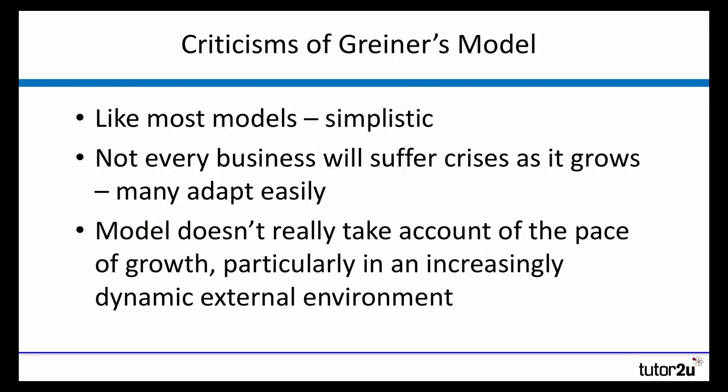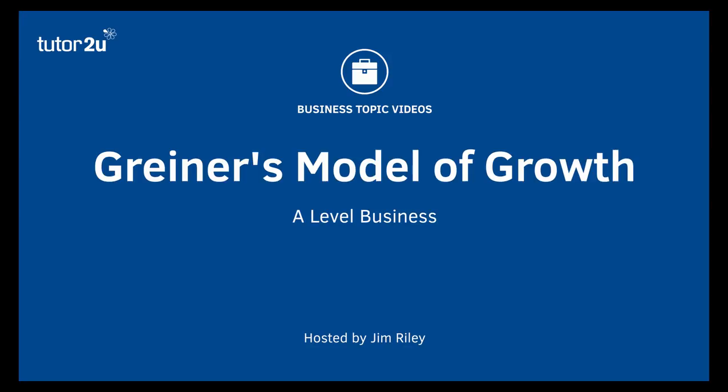There are some criticisms of the model. Like most models in A-level business, it's pretty simplistic, but it serves a purpose in terms of trying to predict and explain why businesses go through problems. Not every business will suffer the crises that Greiner predicts, neither will they necessarily go through the phases of growth in the way the model predicts. A valid criticism is that as business growth changes in the current environment, the model doesn't really take account of how quickly business is changing, in particular the external environment. But nevertheless, it's an interesting model and one that A-level AQA students need to have an awareness of.